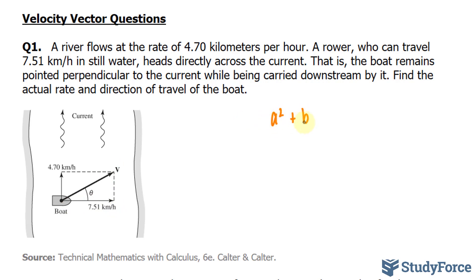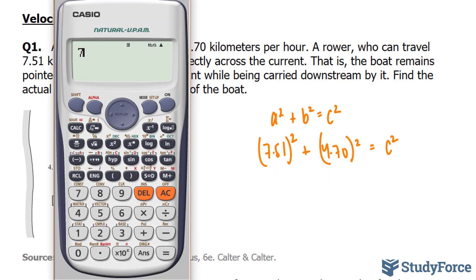A squared plus B squared equals C squared. 7.51 will be replaced with A and B will be replaced with 4.70. And this equals C squared, which is what we're looking for. Now we'll simplify, so we will find out what the left side equals.